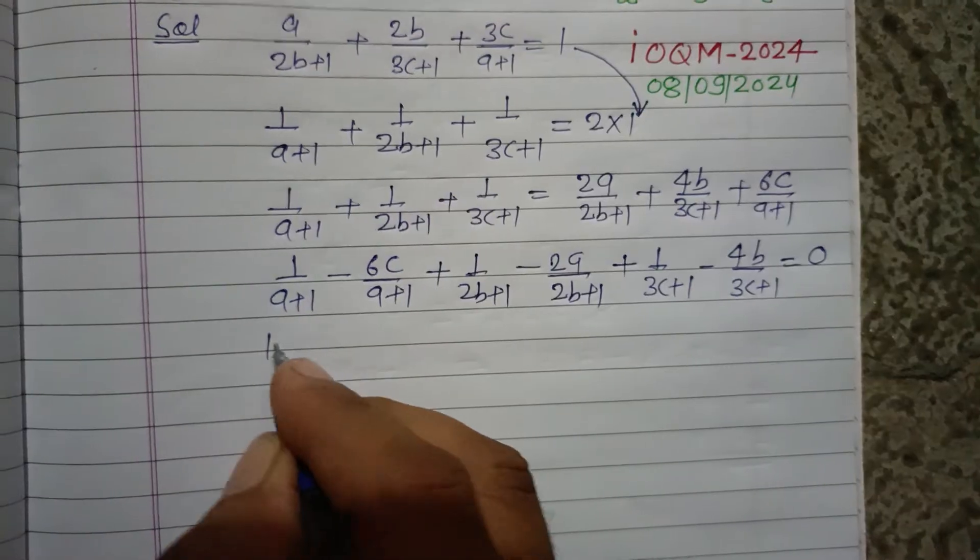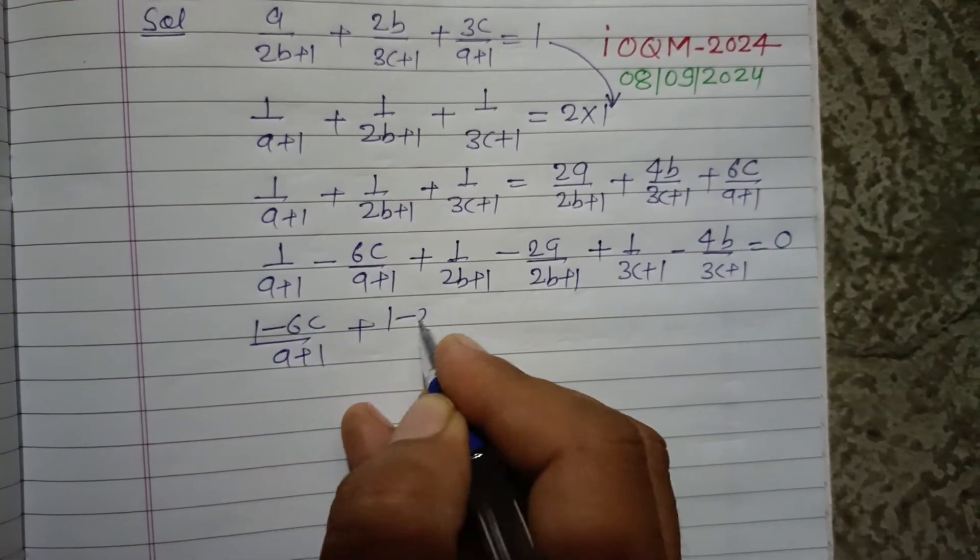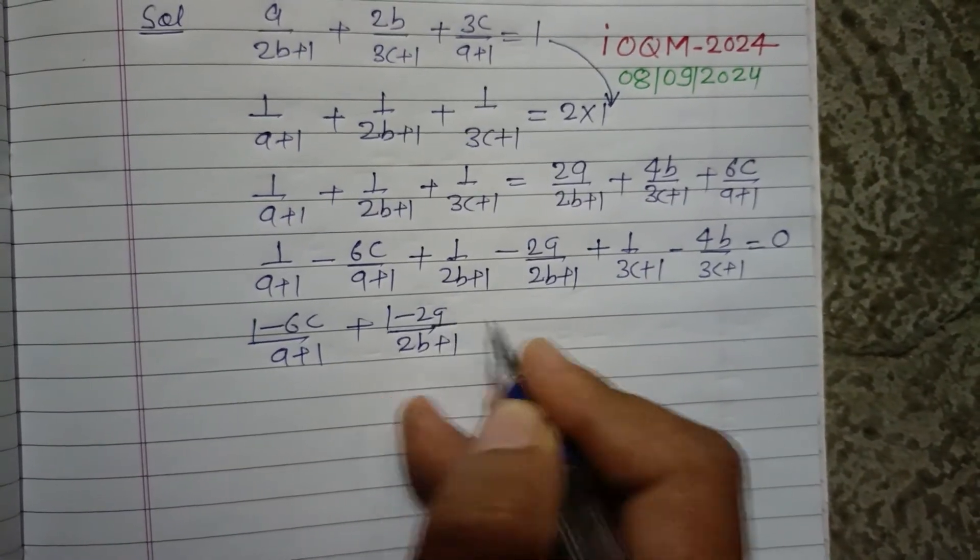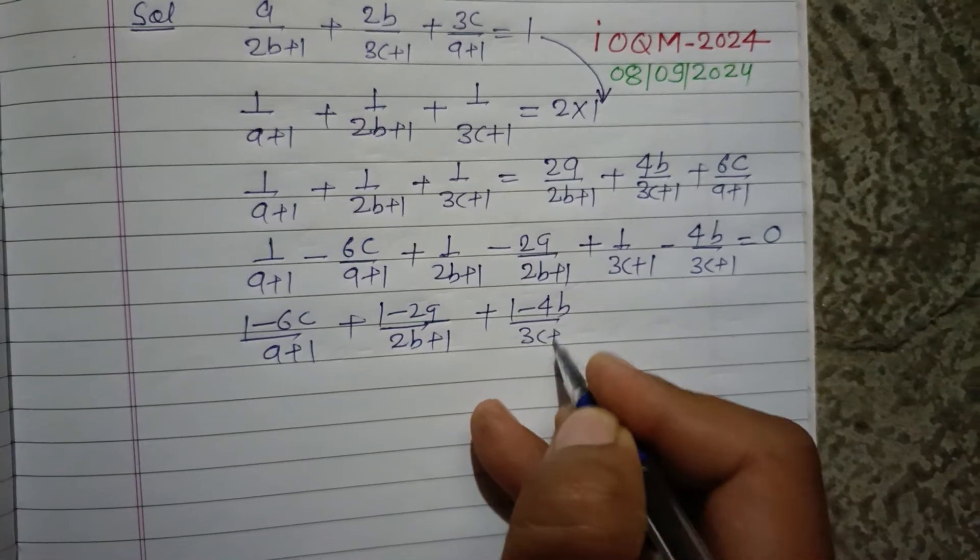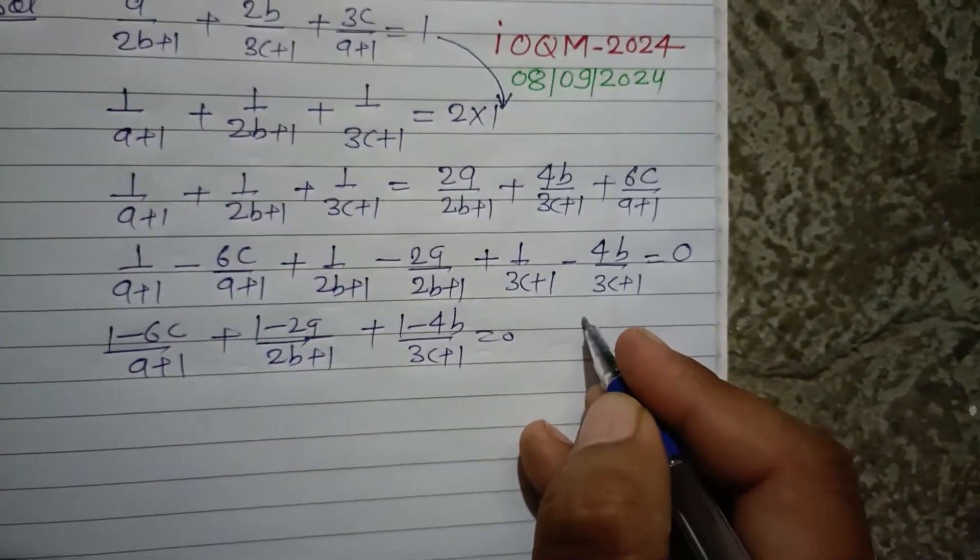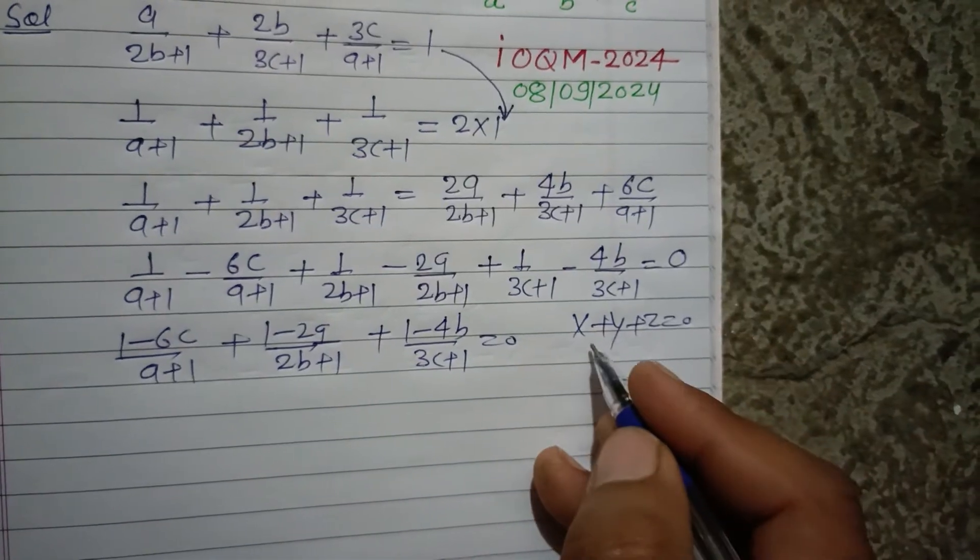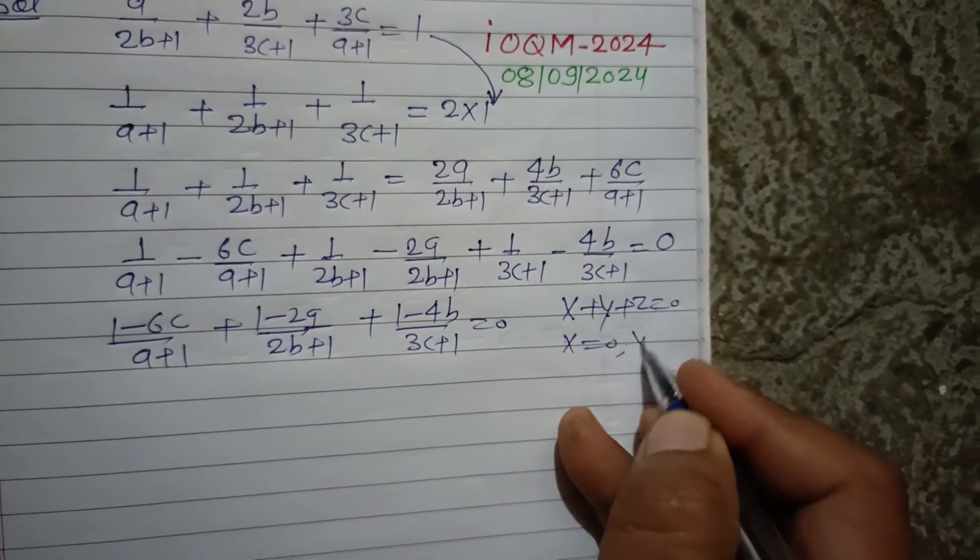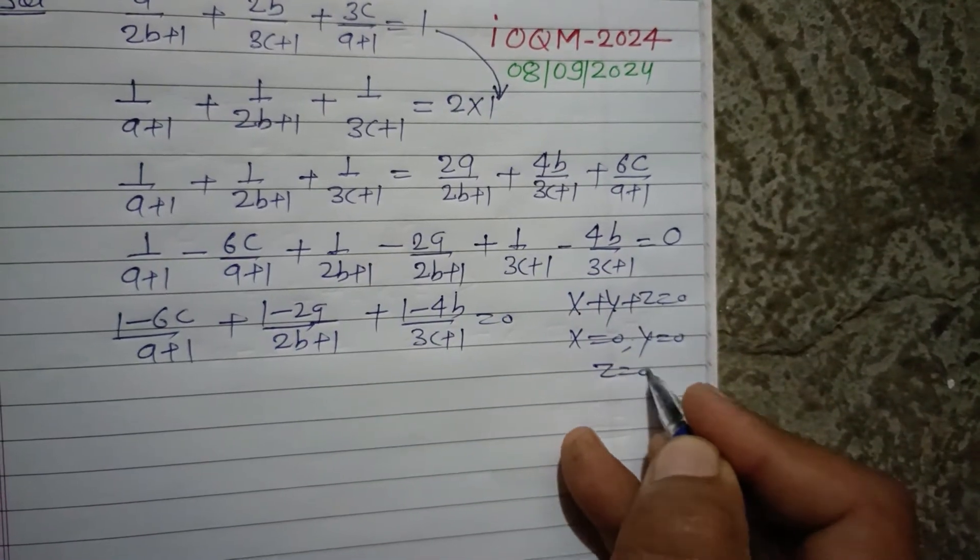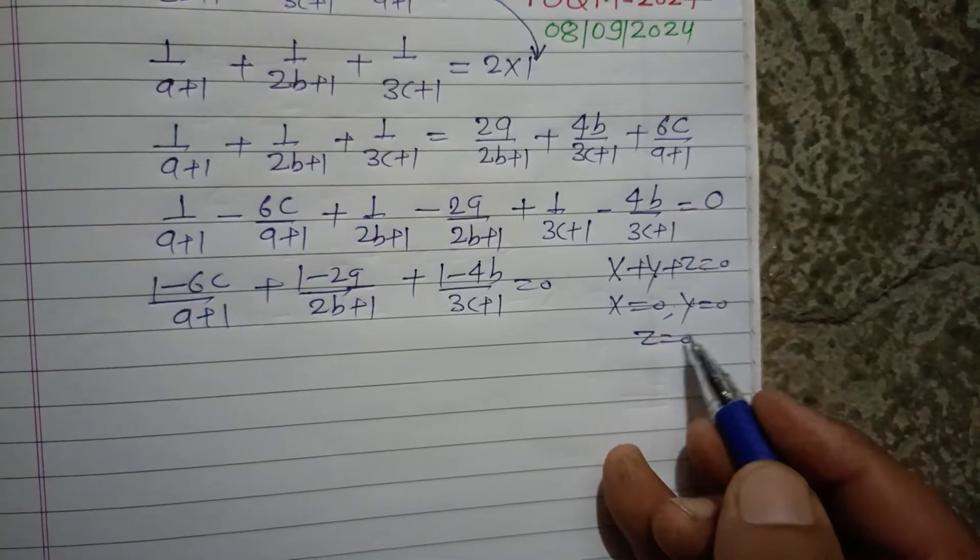Now we take 1 minus 6c over a plus 1 plus 1 minus 2a over 2b plus 1 plus 1 minus 4b over 3c plus 1 equal to 0. Now we use the property: if x plus y plus z equal to 0, this is possible only when x equal to 0, y equal to 0, z equal to 0.